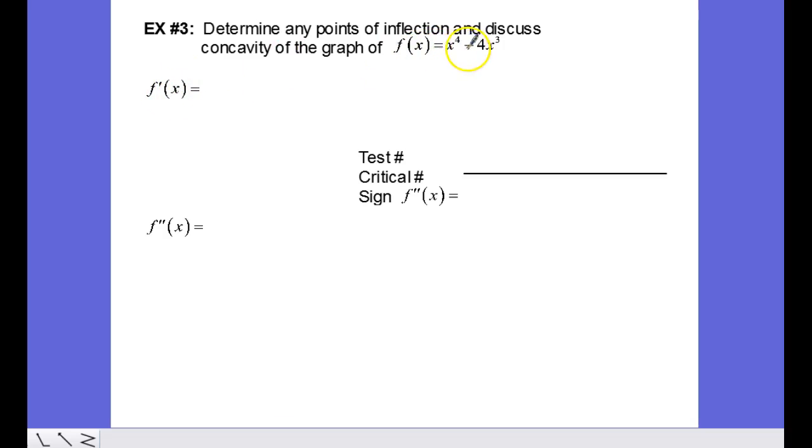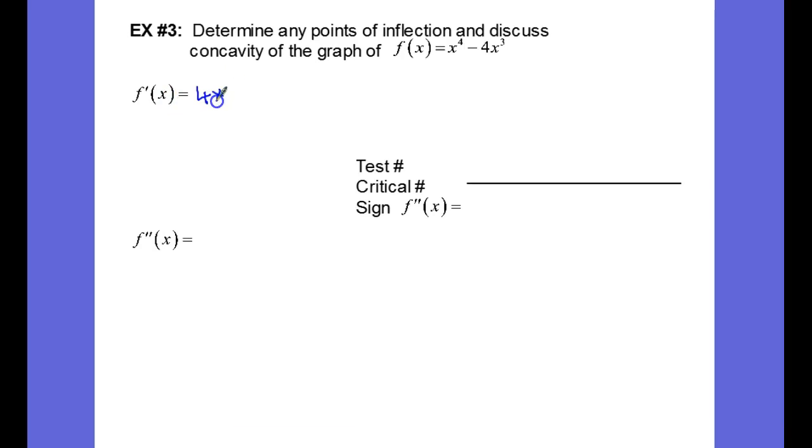So f prime of x, differentiating we have via the power rule, 4x cubed minus 3 times 4 is 12x squared.